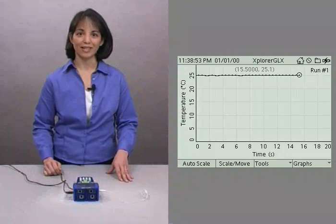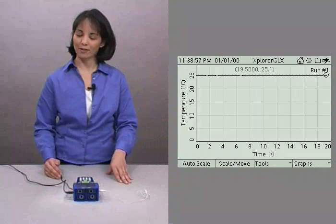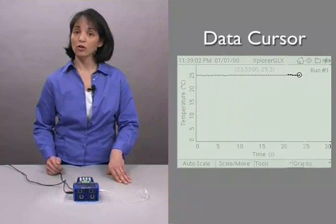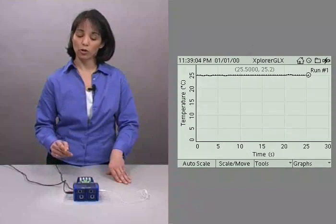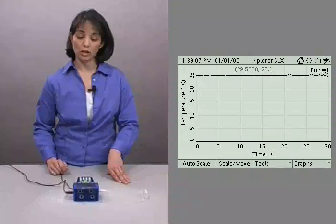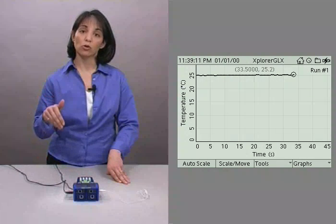Of course, the obvious indicator that we are collecting data is that data points are appearing on our graph. And you notice at the end of the data on that circle, that's your data cursor and its coordinate points are at the top of the GLX screen. It is currently set to be on the most recently recorded data point.